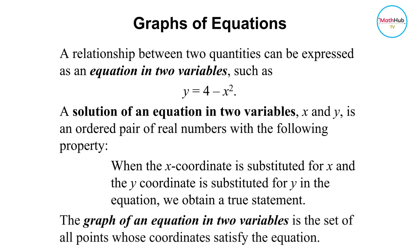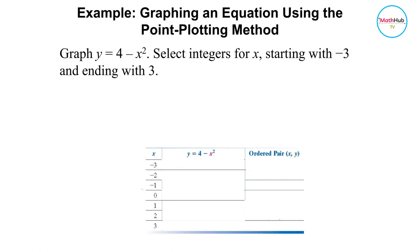The graph of an equation in two variables is the set of all points whose coordinates satisfy the equation. So for instance, graph y equals 4 minus x squared.